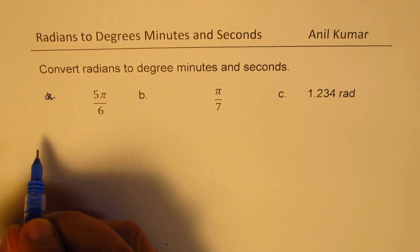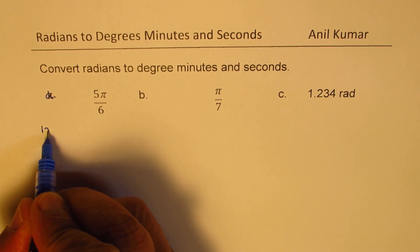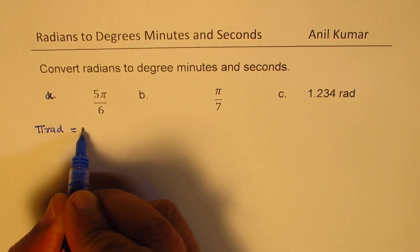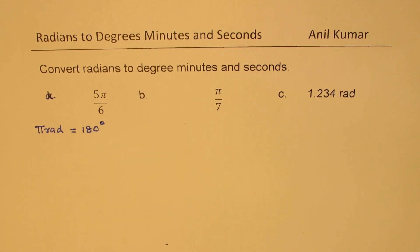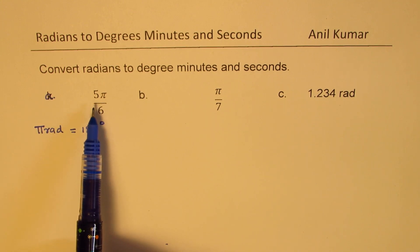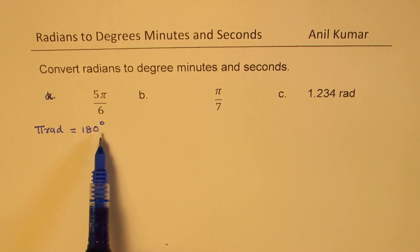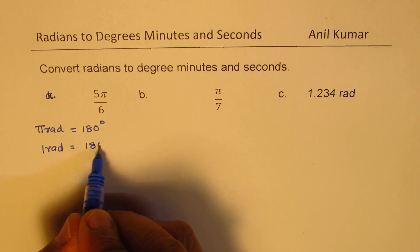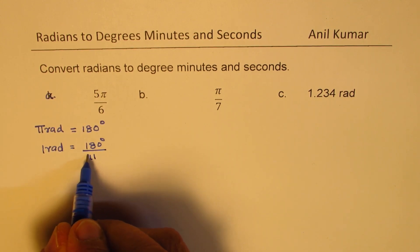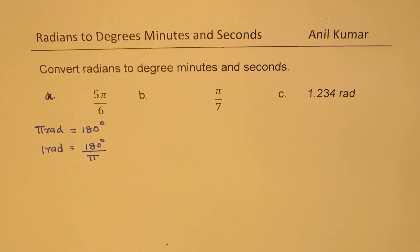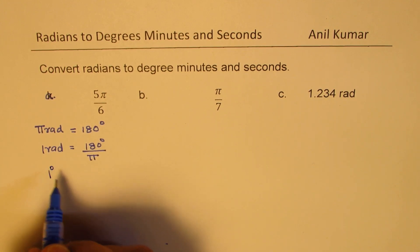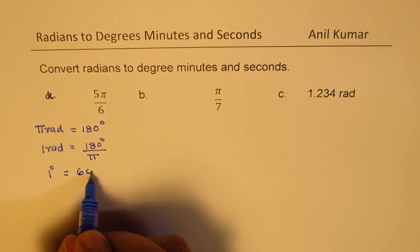Let's recall the general formulas. We know that π radians is equal to 180 degrees — that is one relation between radians and degrees. So if we have to convert radians to degrees, we use the factor: 1 radian equals 180 degrees divided by π. That becomes the conversion factor to convert into degrees.